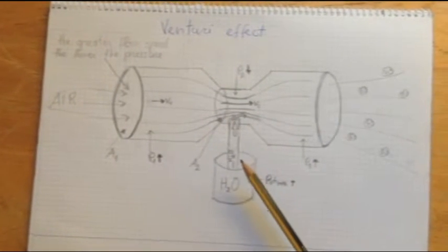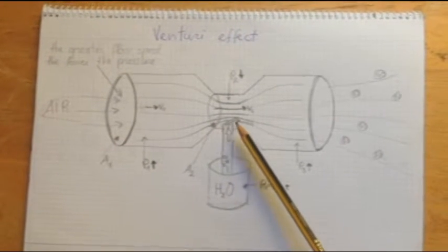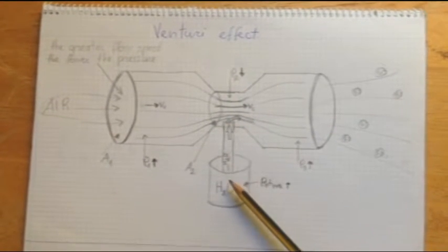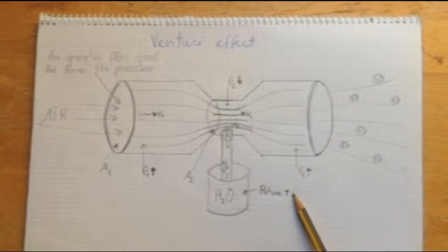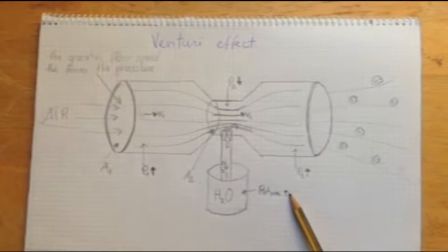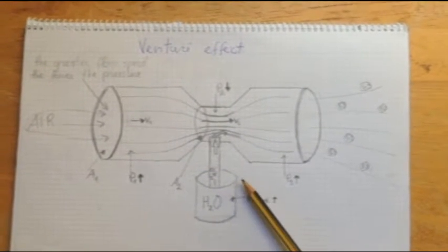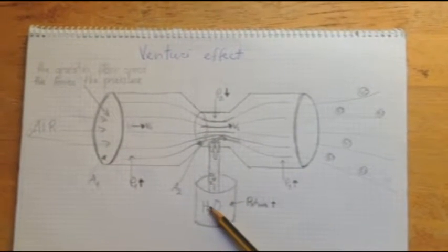As the pressure decreases in the constriction, the water pressure, which is equal to atmosphere pressure, is going to be higher than the pressure through the constriction zone. Because the water pressure is higher, the fluid is going to be sucked up.